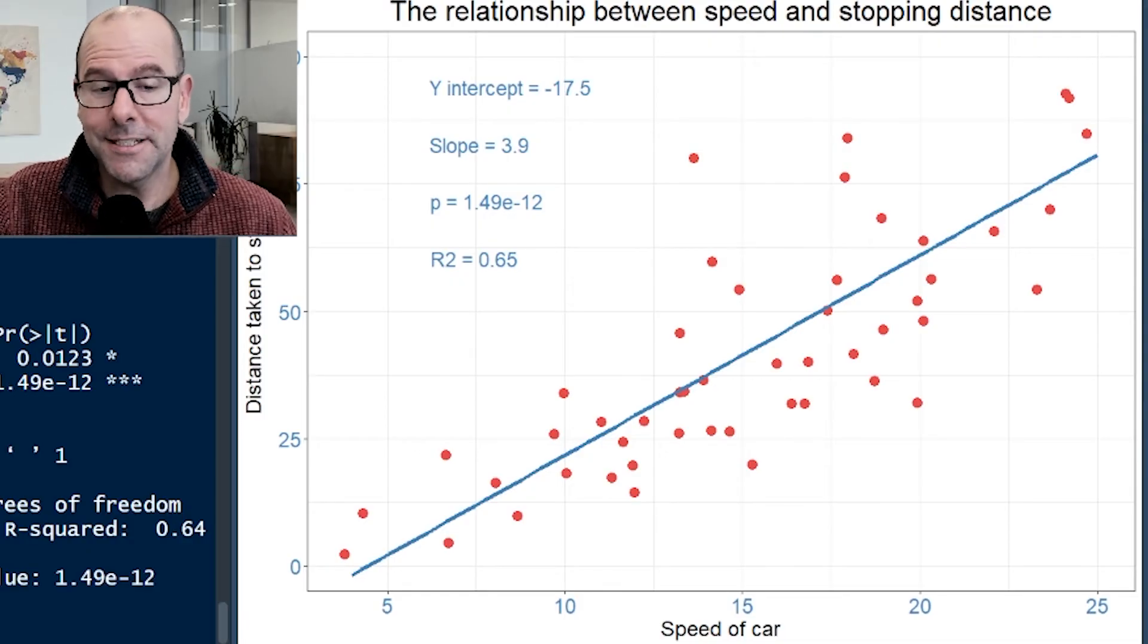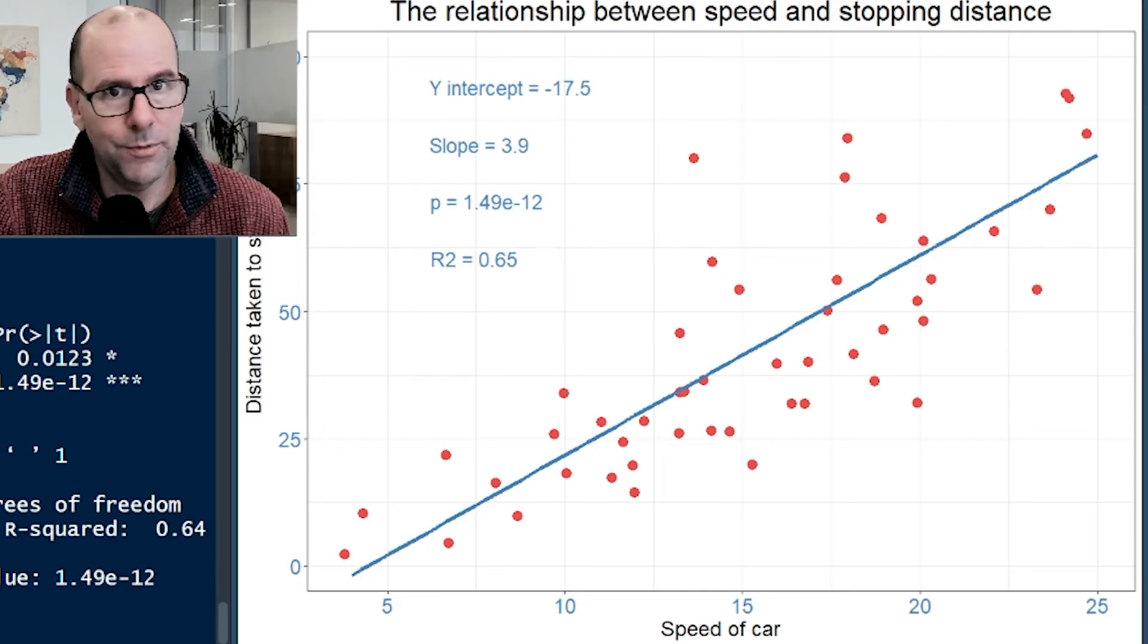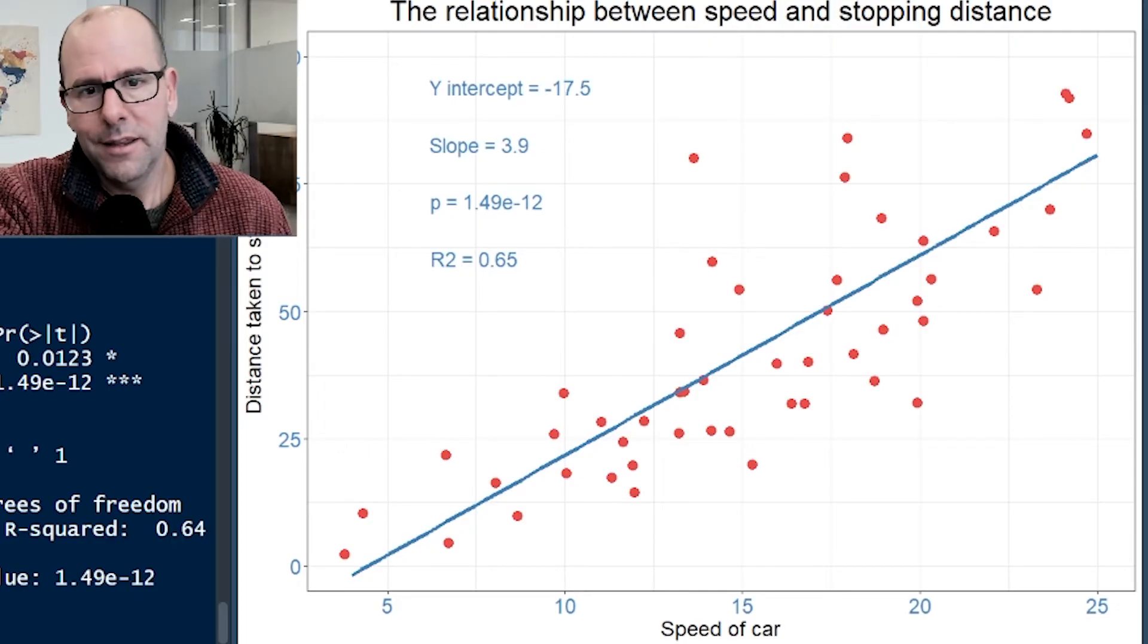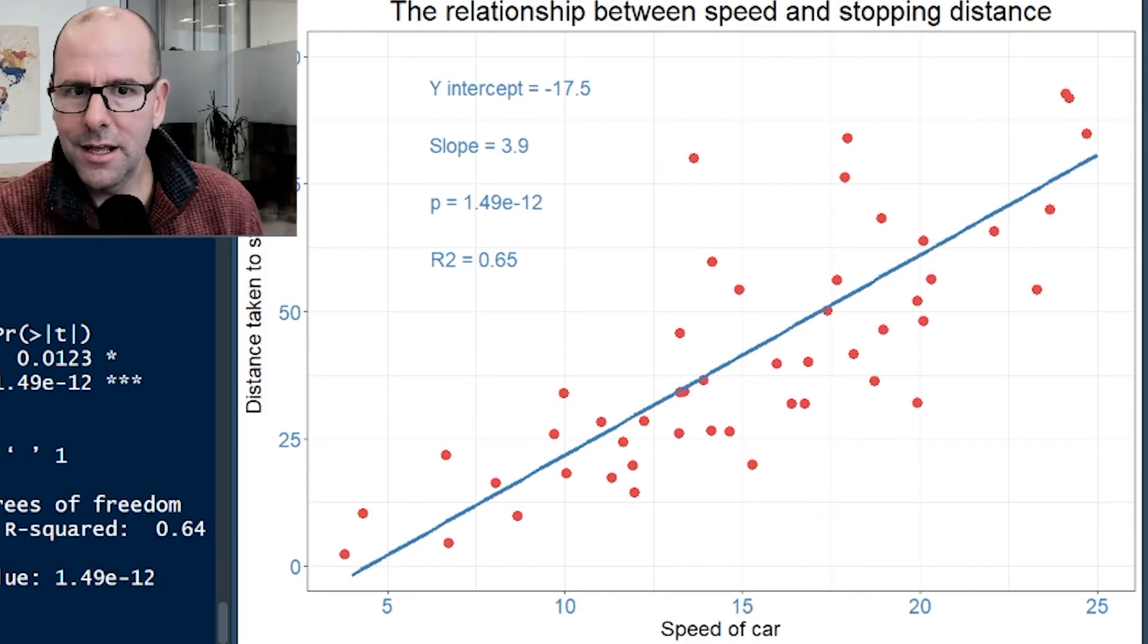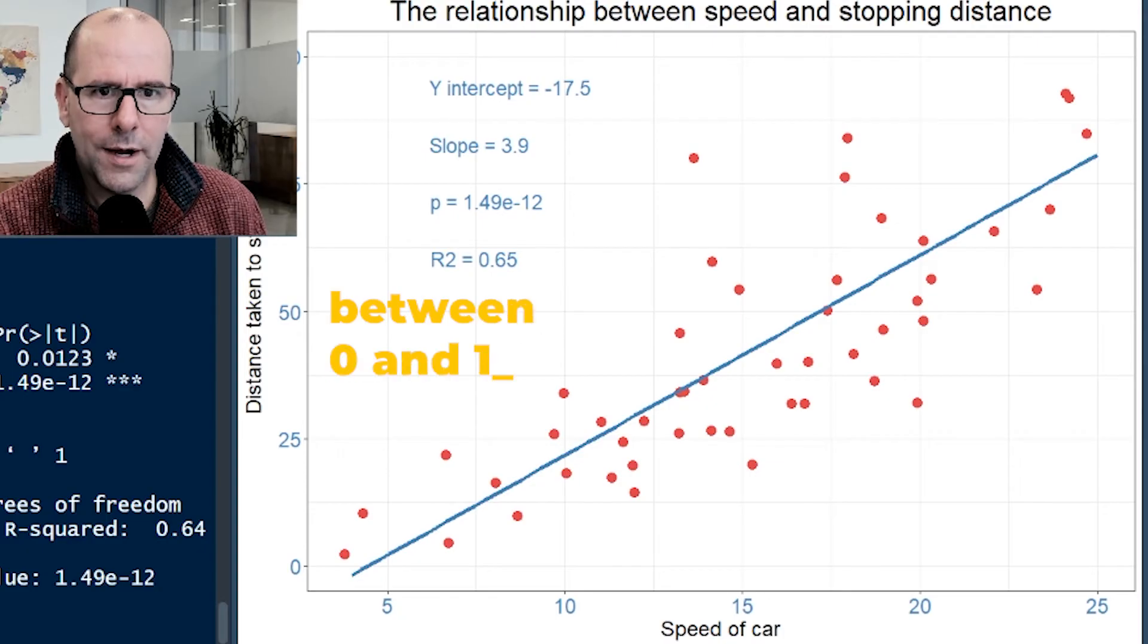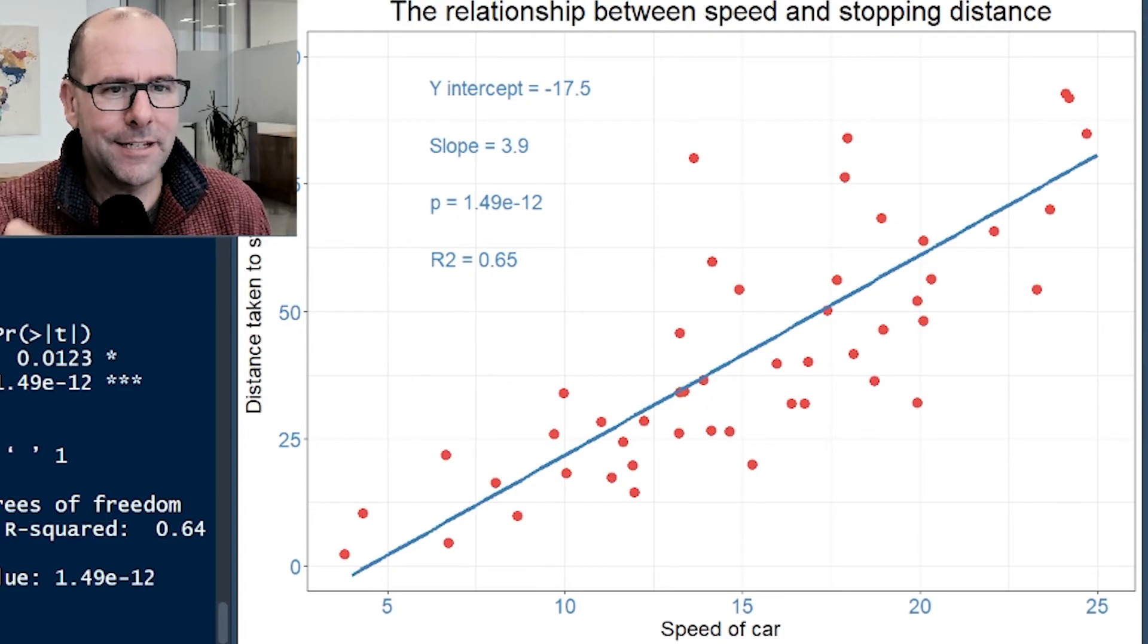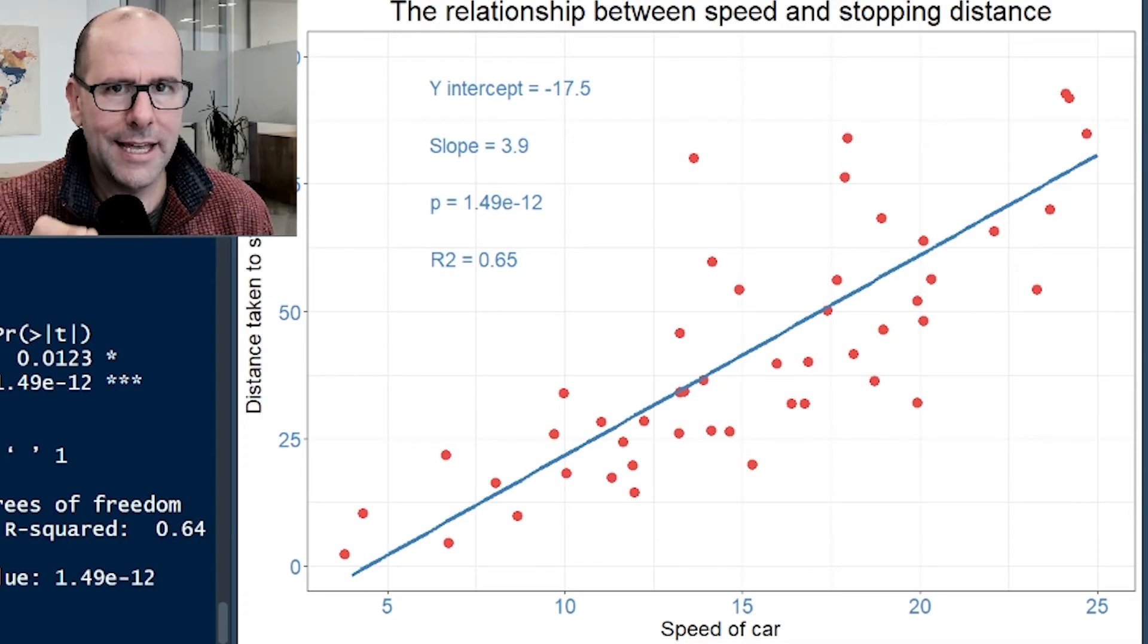We're unlikely to ever have all the variables. There's always going to be an element of how much of the change in y can we explain by the change in x. In this case, we've only got one variable. We're never going to explain all of the change in the y variable, but we can explain quite a lot because this R-squared is a number between zero and one. 0.65 means 65 percent of the change in distance taken to stop can be explained by a change in the speed of the car.